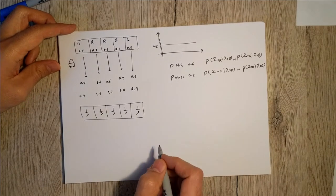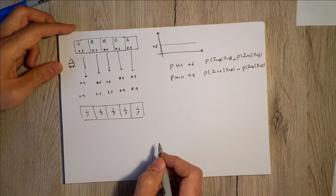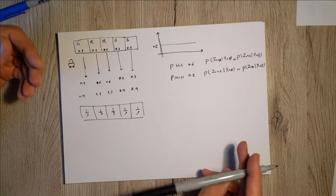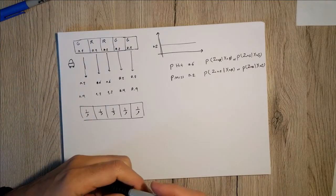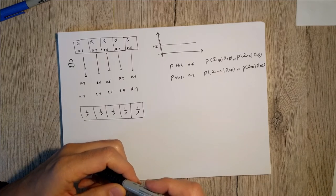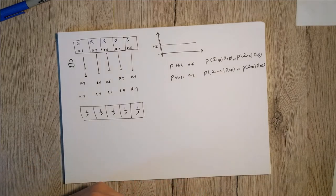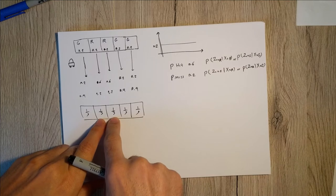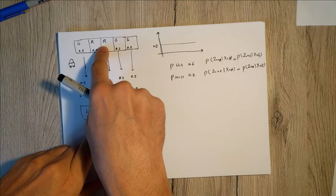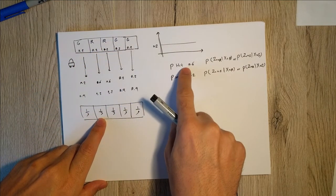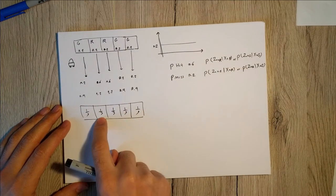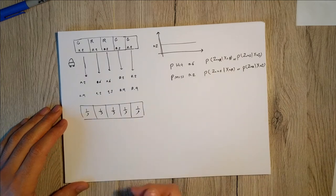As you can see, the update decreases entropy — we are now more sure where we are. It is most likely we are in one of the two red states (states 2 or 3), because we measured red and our sensor has relatively good reliability. This makes perfect sense.